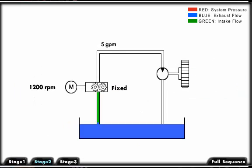In this example, a motor turning at 1200 RPM is driving a fixed displacement gear pump producing 5 gallons per minute flow. The GPM can be changed if the RPM of the motor changes.